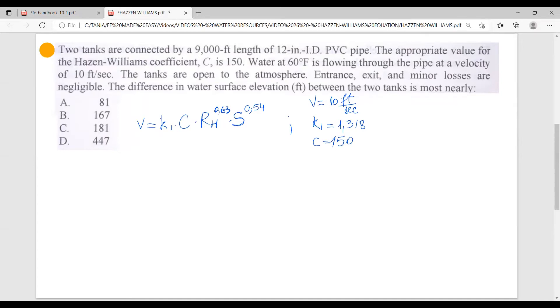We have velocity as 10 feet per second. We have K1 as 1.318. We have Hayes and Williams coefficient 150. We know that the tanks are connected by a 9000 feet length of 12 inch in diameter. Let's say we have our tank, one tank here, another tank over here, tank one, tank two, and we have the pipe that connects them, the 9000 feet pipe. This is the difference in elevation. So our slope is equal to H over 9000. Our slope is H over 9000 feet. So we can replace it in our formula.